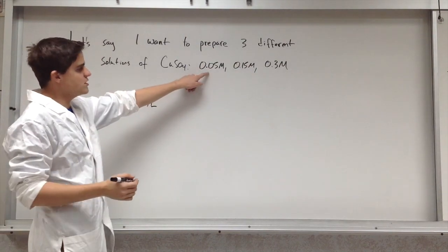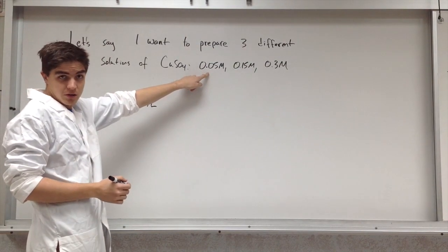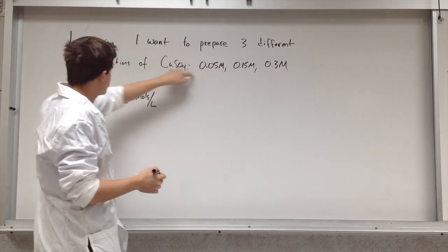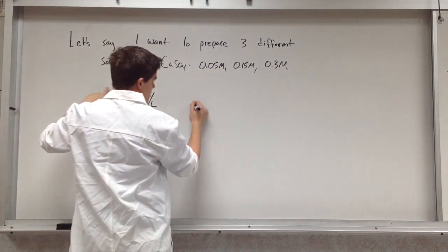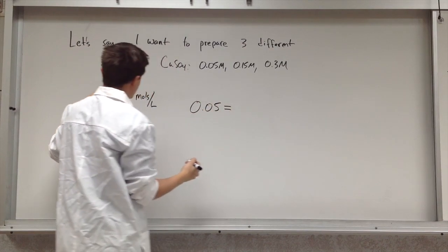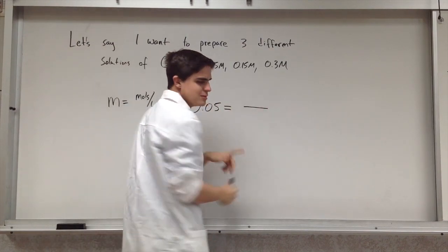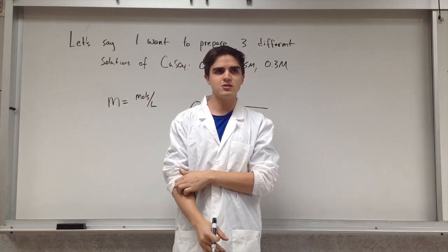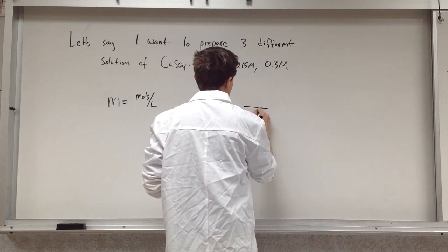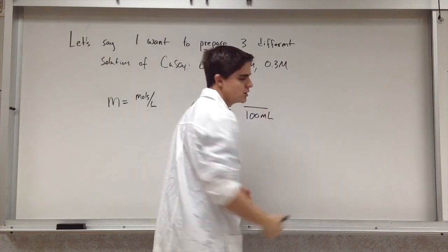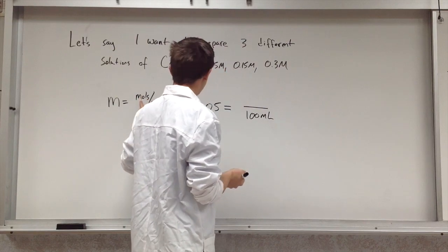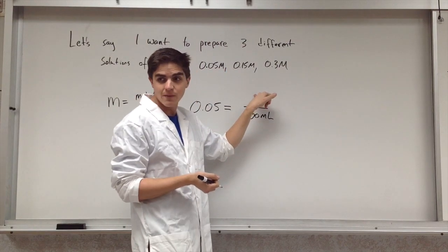So again, our solution here is going to be molarity equals moles per liter. So let's just set up for the 0.5 molar here. Okay, so I need 0.5 molar. That means I need 0.5 molar goes in for the molarity. So 0.5 moles per liter. And I just said, this is given to you in the problem, just to be clear, this is what I am looking to make, that I need 100 milliliters of solution. Why not? And I need to know how many moles it's going to take.